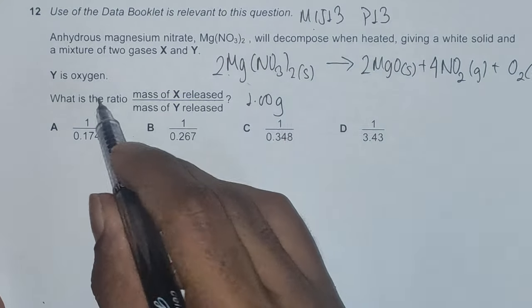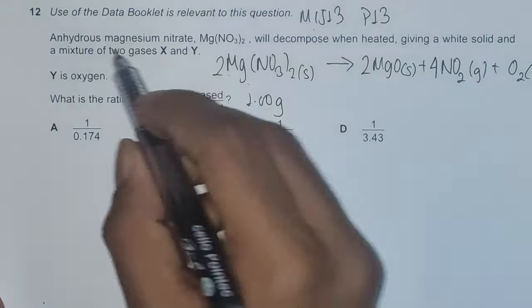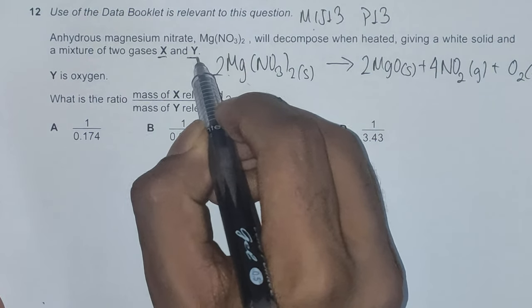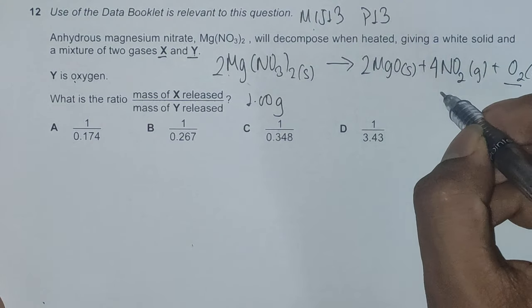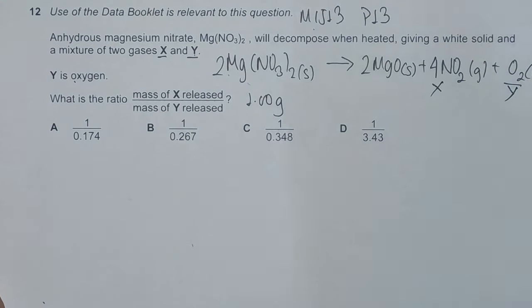Y is oxygen, giving a white solid and mixture of two gases X and Y. Y is oxygen, so X should be nitrogen dioxide. This is X and this is Y.